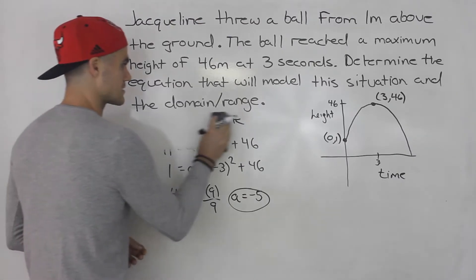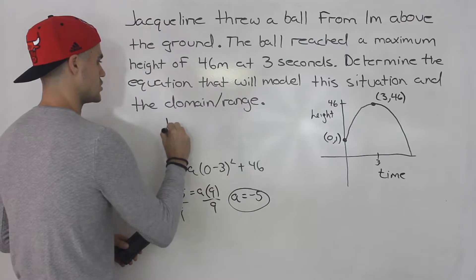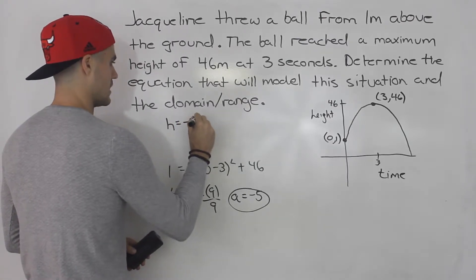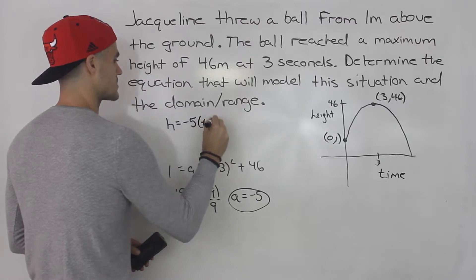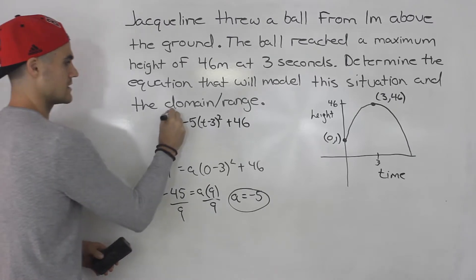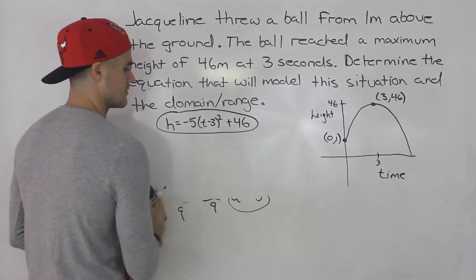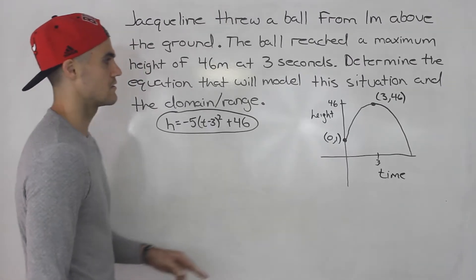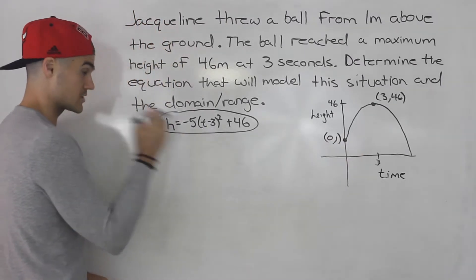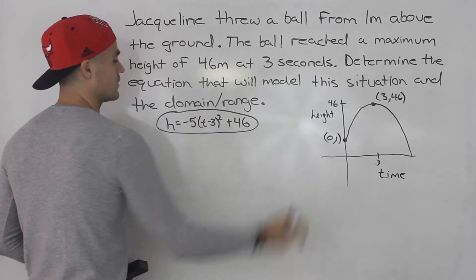So the answer is h = -5(t - 3)² + 46. That is the equation that models this situation, that models this parabola over here. So we took the vertex, plugged it into the vertex form, then solved for the a value with the y-intercept.